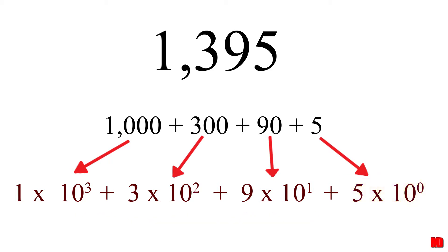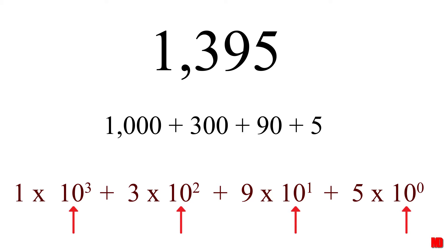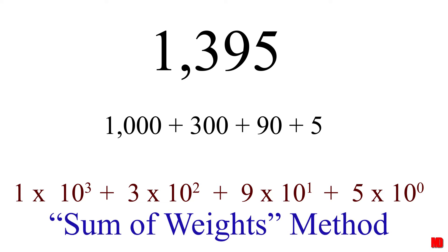The multiple of 10 is called the weight. 9 has a weight of 10, in other words. So this is how the decimal system we use works. We weight each digit, 0 through 9, and add them together to express numbers greater than 9, such as 1,395. This is called the sum of weights method.